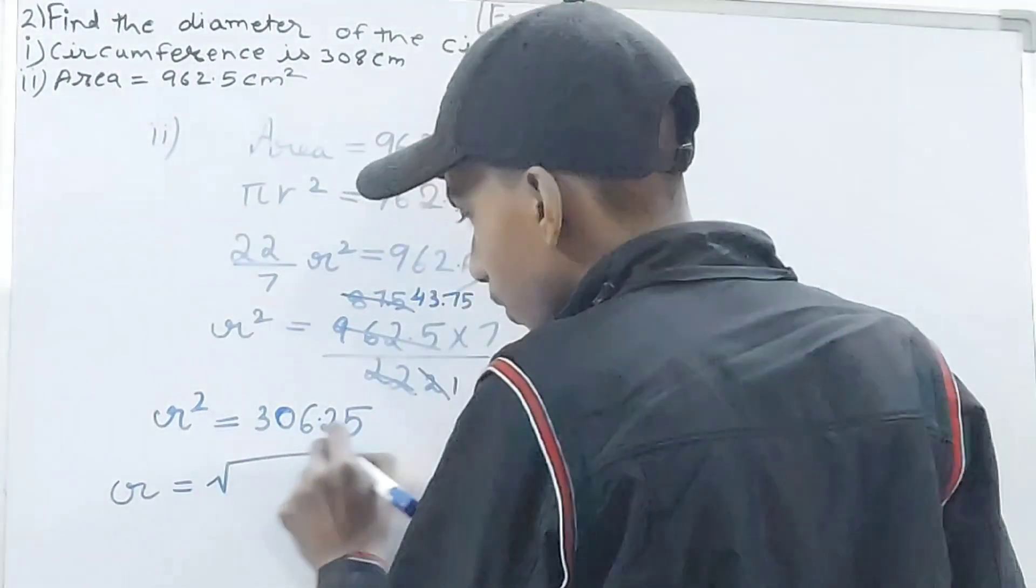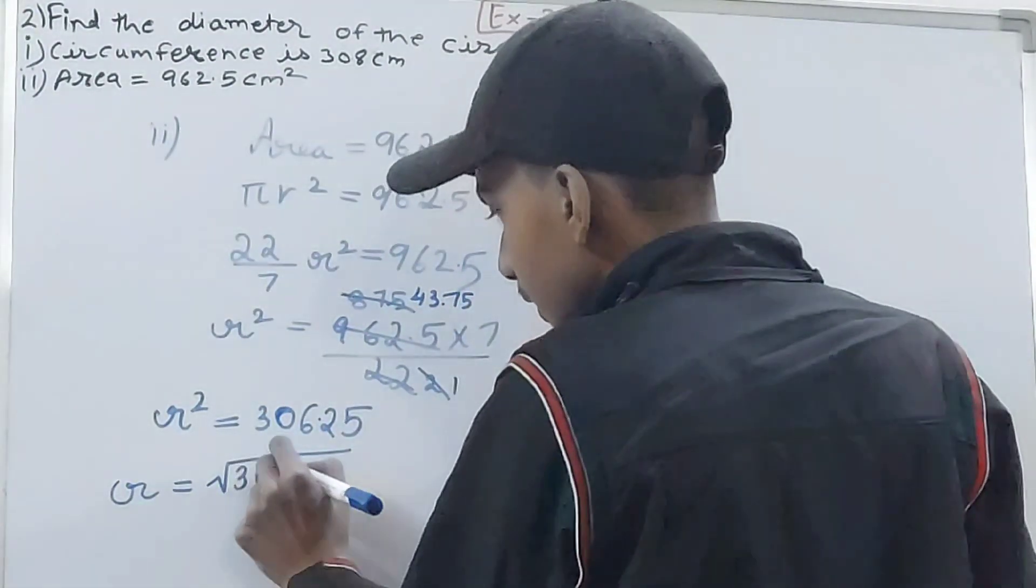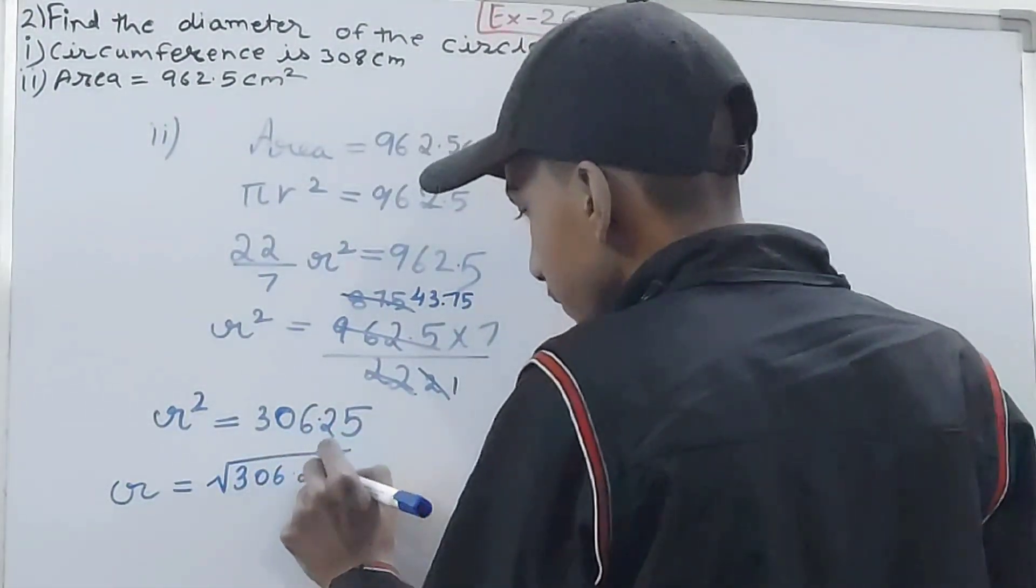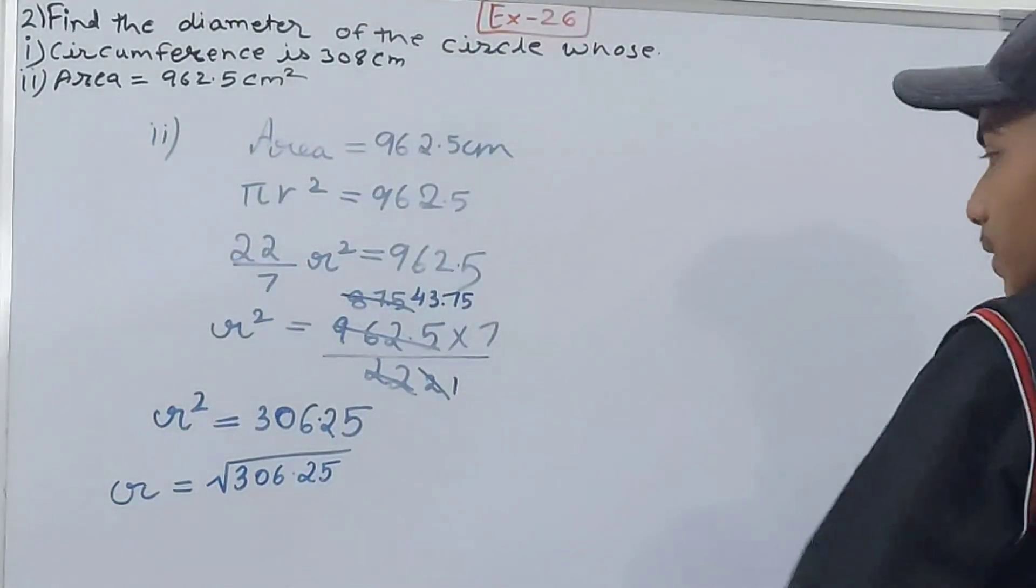Let's find the square root of 306.25 using long division. This will go by 1. Double this. Now let's put a number here that should come nearest to this one.